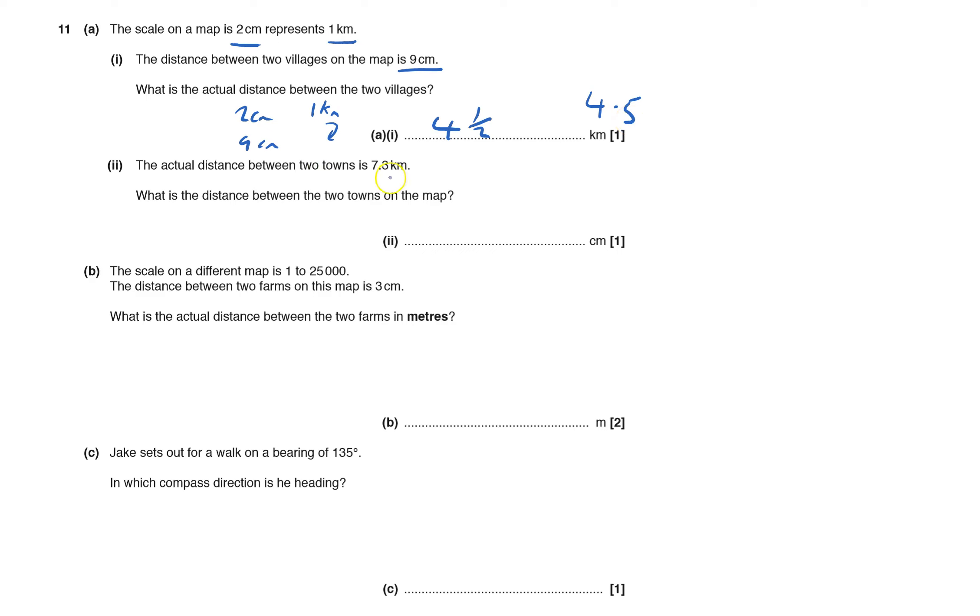The actual distance between two towns is 7.3 kilometers. We've got two centimeters being one kilometer. We're now told it's 7.3 kilometers, and this one here is double that one. So all I have to do is double that - one times 7.3 to get here.